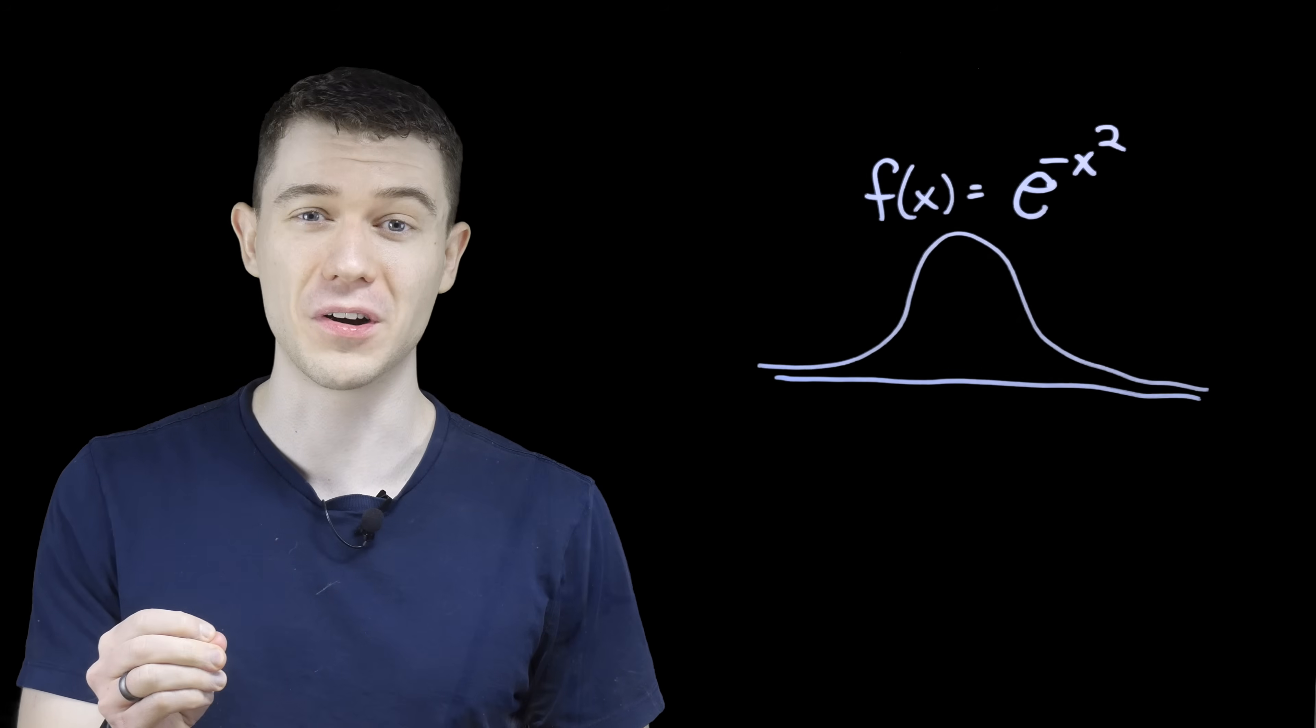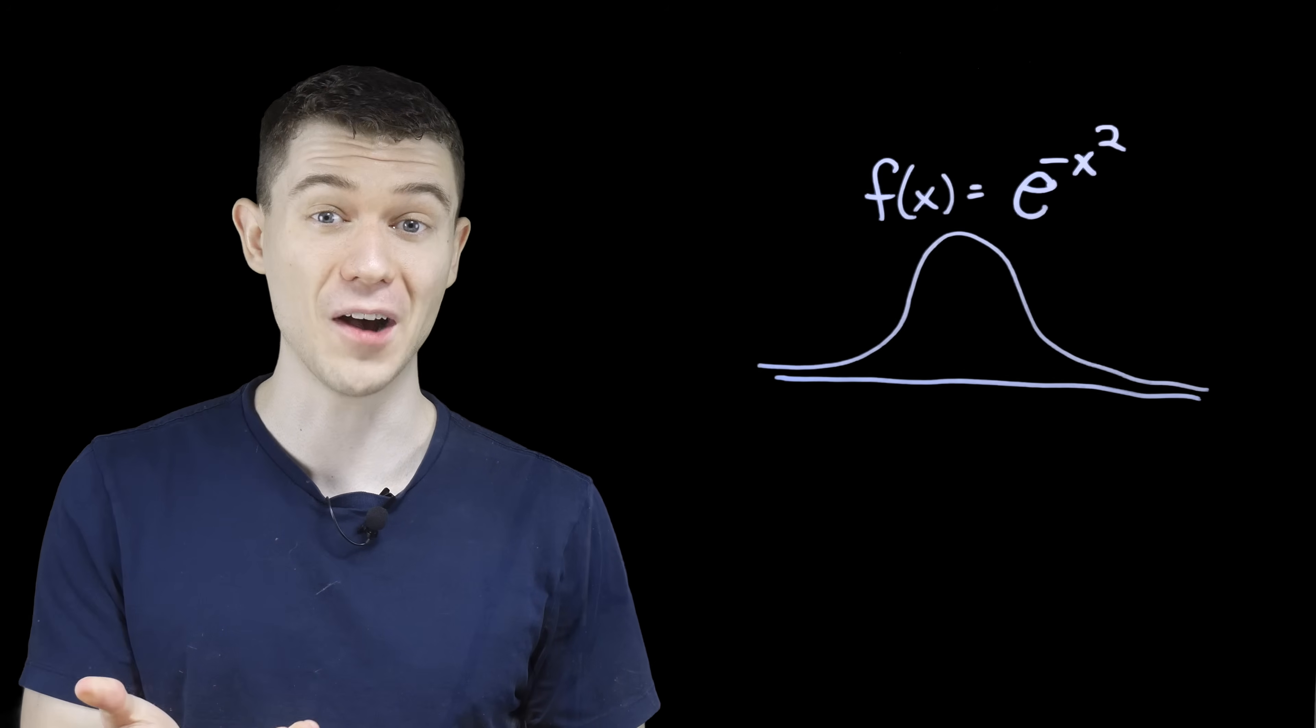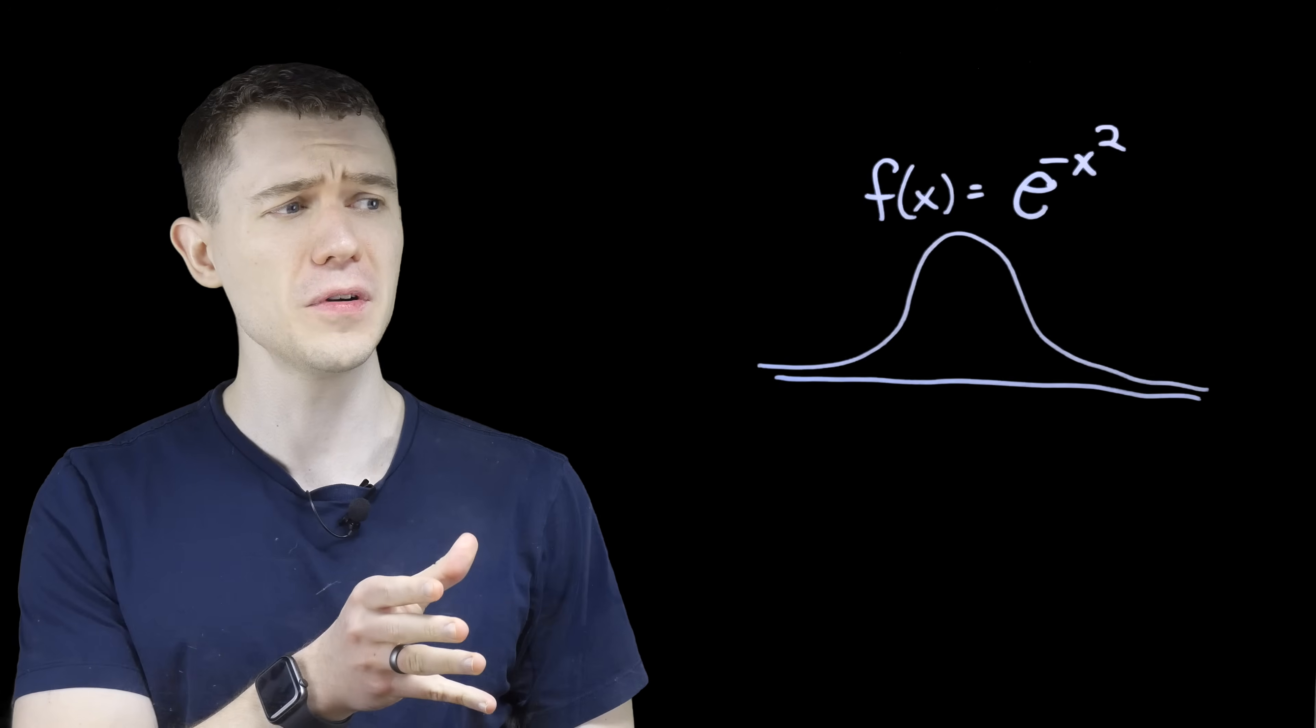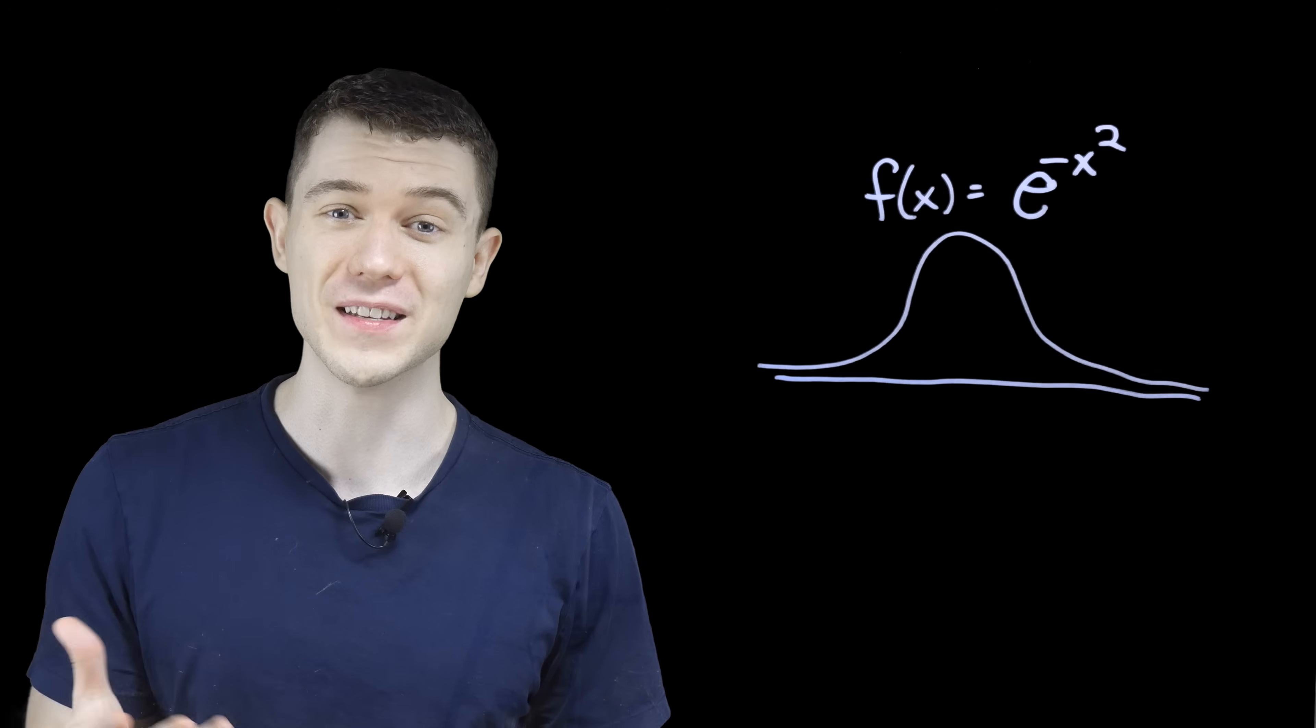This shape is known as a bell curve, or we might call it a Gauss curve. It's super important for many reasons.